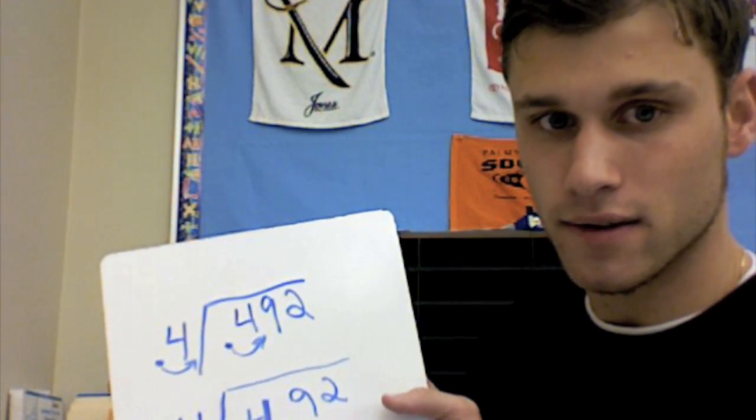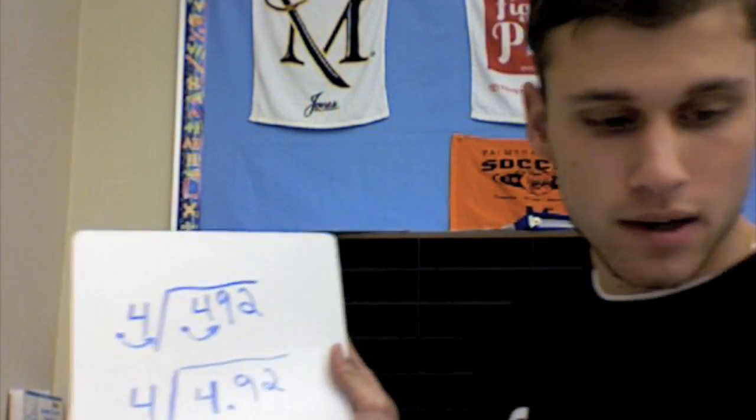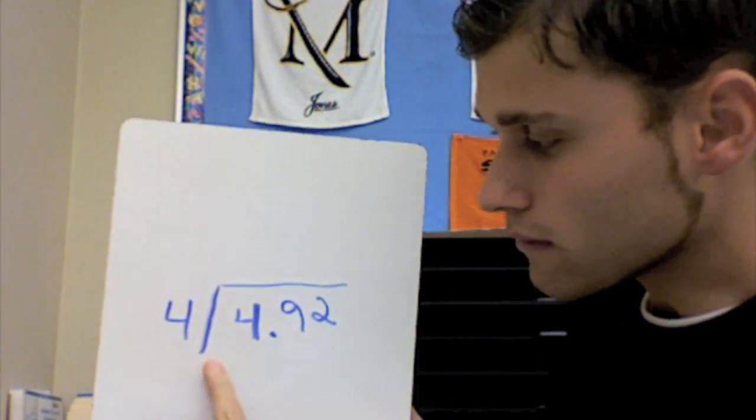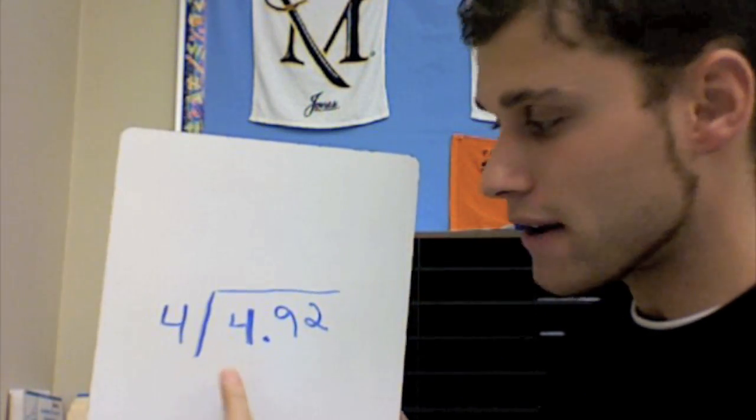Now we're ready to just divide. Now we can divide. I'll even erase this one, this top problem. Get it completely out of the way. All right, now, with our problem here, 4.92 divided by 4.